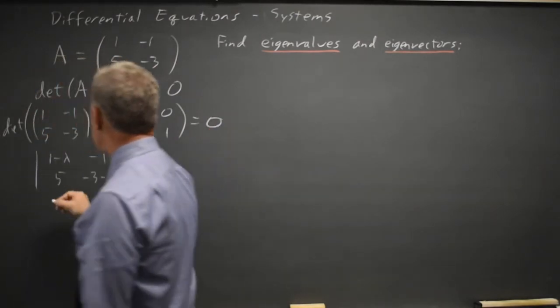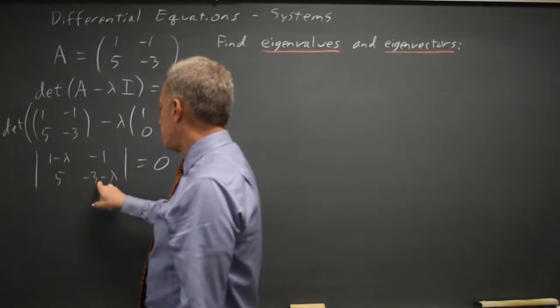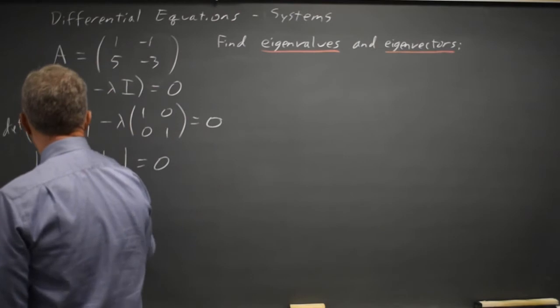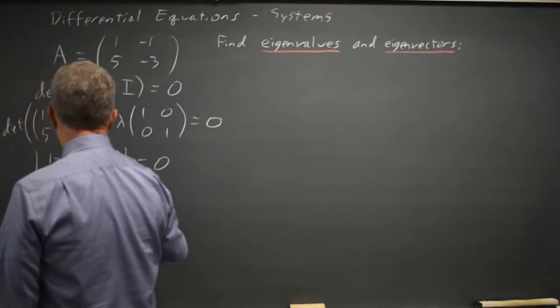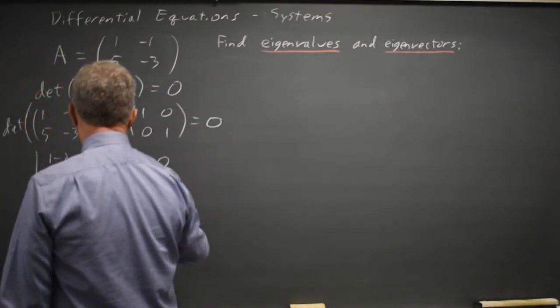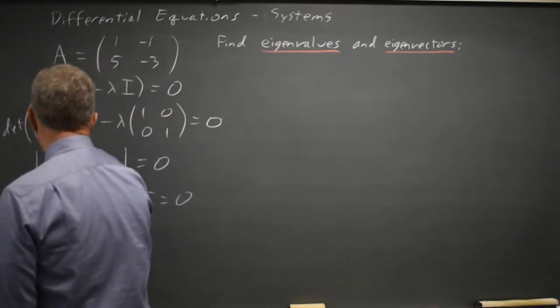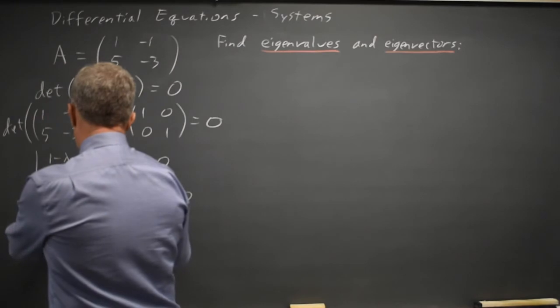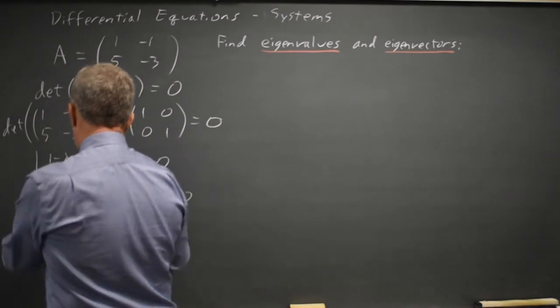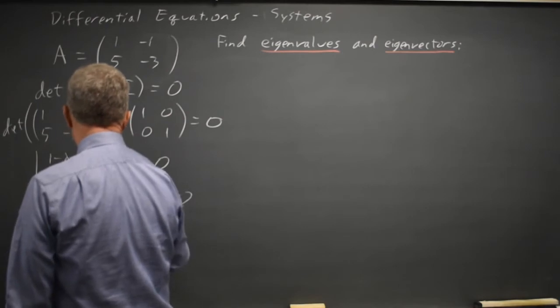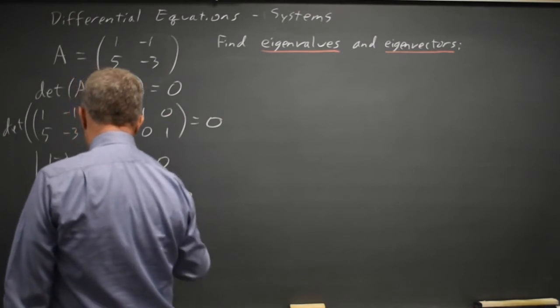The determinant of a 2 by 2 is the product of the main diagonal minus the product of the off diagonal, so that's (1 minus lambda)(negative 3 minus lambda) minus a negative is plus 5, equals 0. Lambda squared plus 2 lambda plus 2 equals 0.